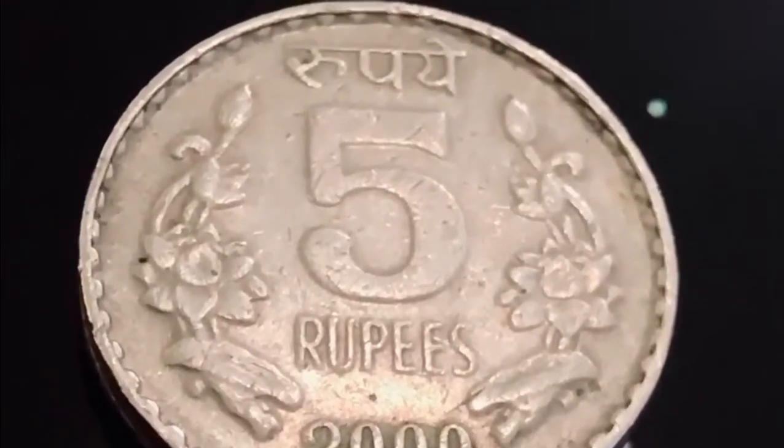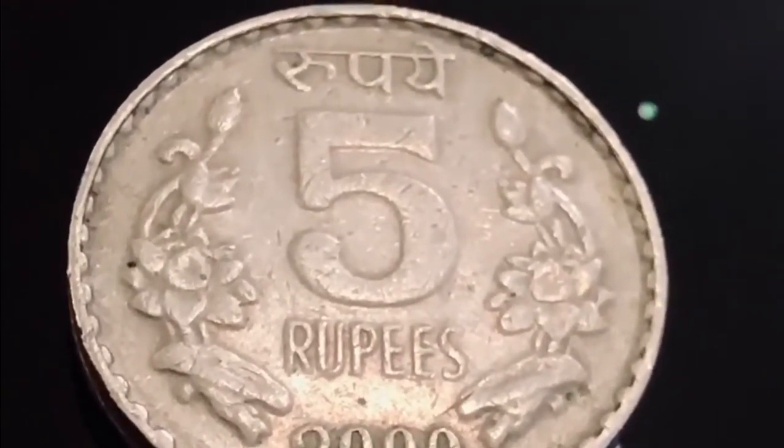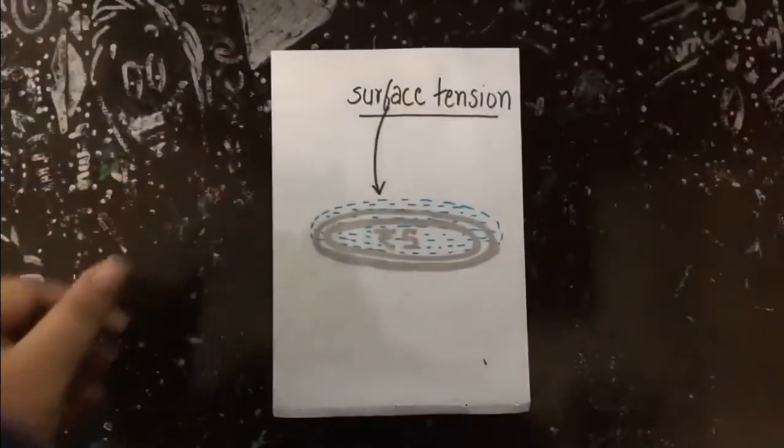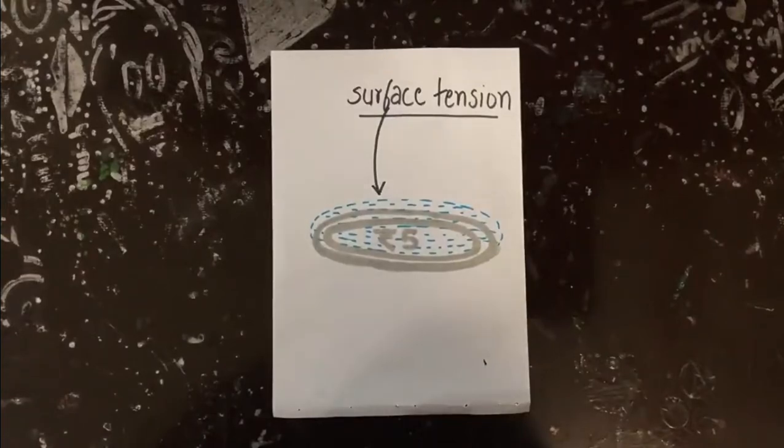So, I tried another experiment based on surface tension with a coin and a dropper. Don't worry, it has water in it. The theory of this experiment is similar to the previous one. The cohesive forces of the water droplets should be able to hold the water within the coin.